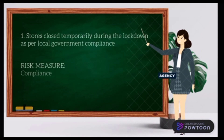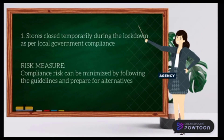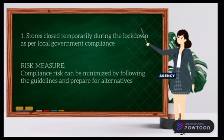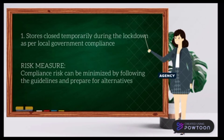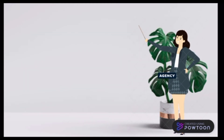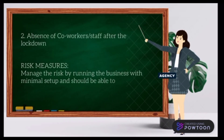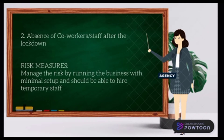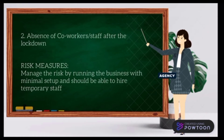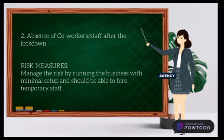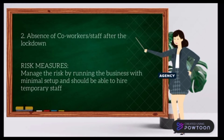Risk measure: Compliance risk can be minimized by following the guidelines and preparing for alternatives. Number two — Tolerate — absence of co-workers or staff after the lockdown. Risk measure: Manage the risk by running the business with minimal setup and being able to hire temporary staff.